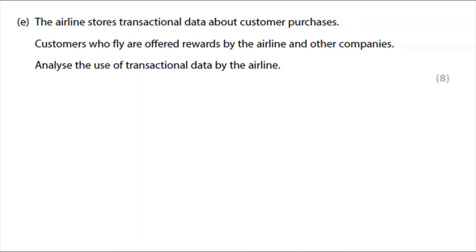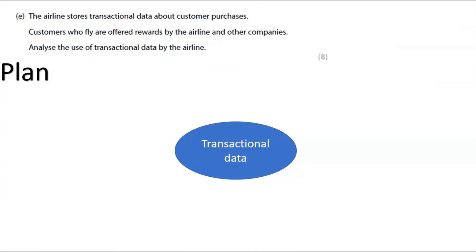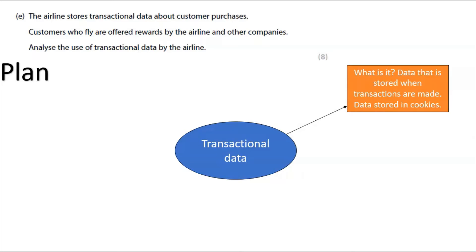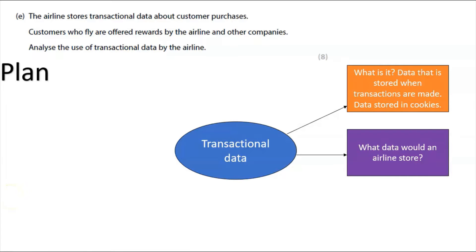I'd recommend asking the examiner for spare paper and writing down a plan. I'm going to show you how to do that. I've written 'transactional data' in the center of my page — I've done this in PowerPoint, but in an exam I'd get a spare piece of paper and write down the words I need to analyze. I'm drawing a circle around that and creating a spider diagram of different things I need to include in my answer. Transactional data is data stored when transactions are made, data stored in cookies.